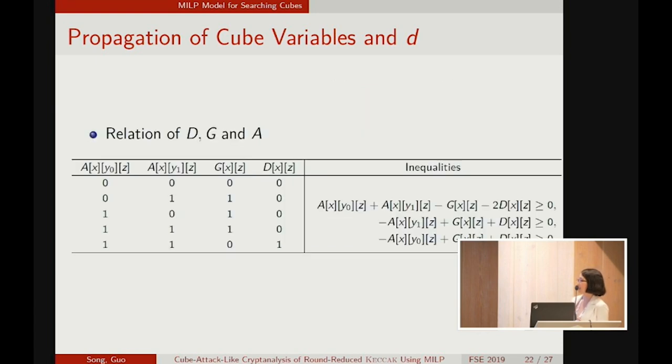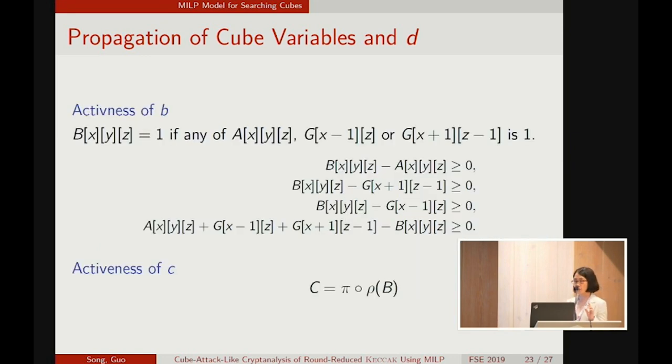And formally, the relation of the activeness of the state, the activeness of the column sum, the sum and the degrees of freedom consumed can be described with three inequalities per column. And with the activeness of the input of theta and the activeness of the column sums, we can derive the activeness of the output of theta. Since its output bit is the sum of two column sums and the bit itself. And so from the activeness of B, we can calculate the activeness of C directly. Since it's just a change of the position of bits.